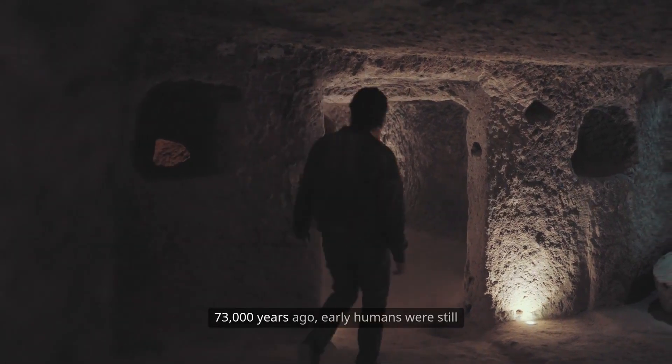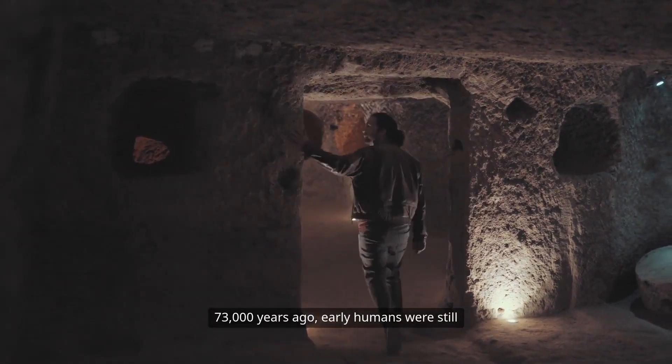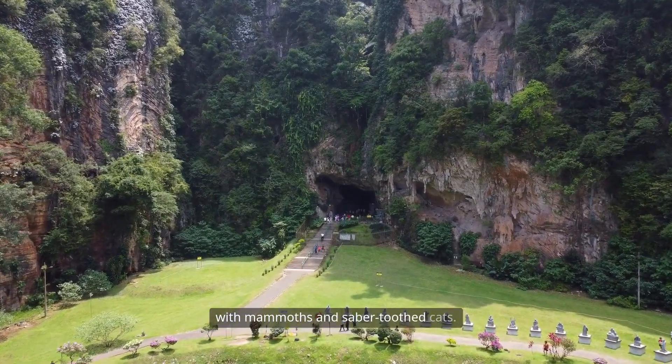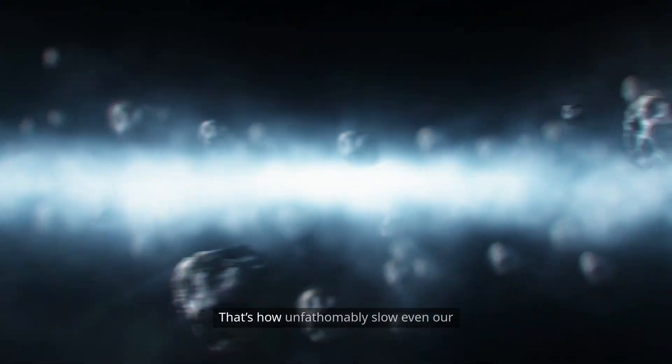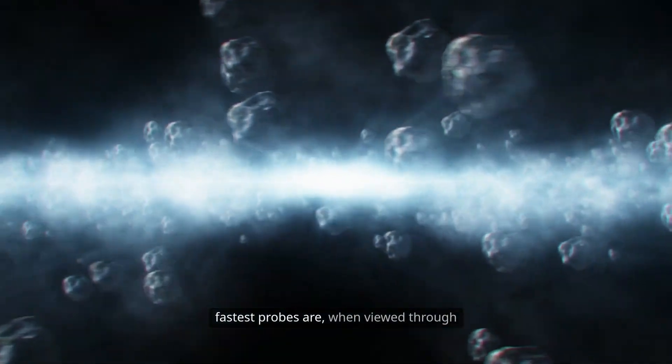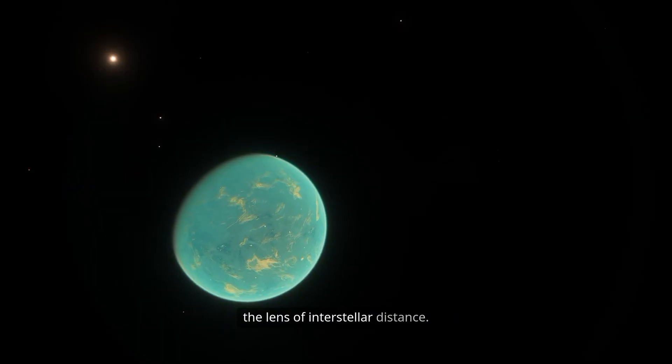73,000 years ago, early humans were still painting on cave walls and sharing the planet with mammoths and saber-toothed cats. That's how unfathomably slow even our fastest probes are when viewed through the lens of interstellar distance.